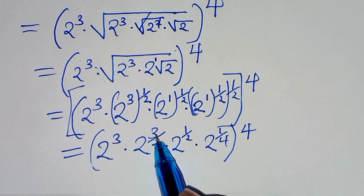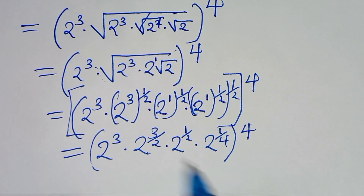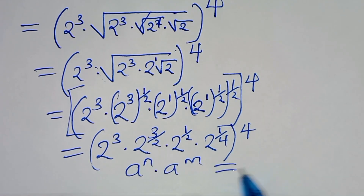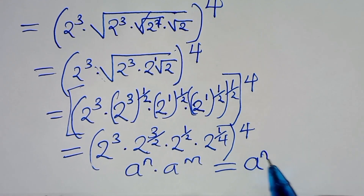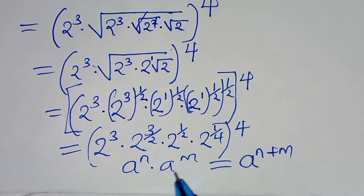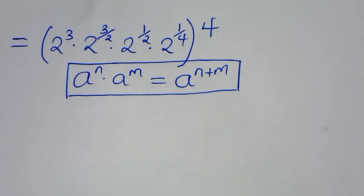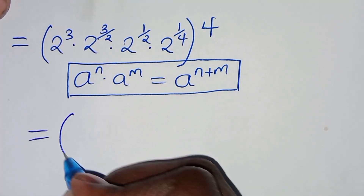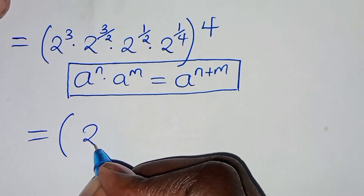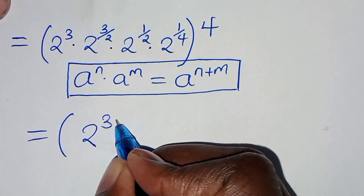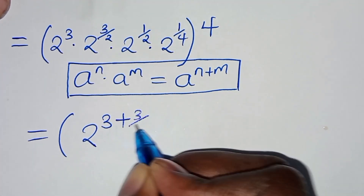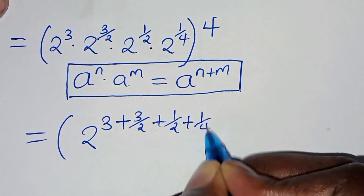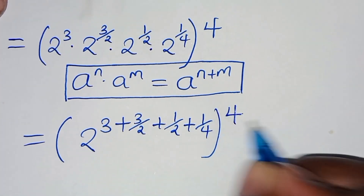So 2 to power 3 times 2 to power 3 over 2 is in the form of a to power n times a to power m, which we can express as a to power n plus m. Applying this exponent property, we have 2 to power 3 plus 3 over 2 plus 1 over 4, close the bracket, raised to power 4.